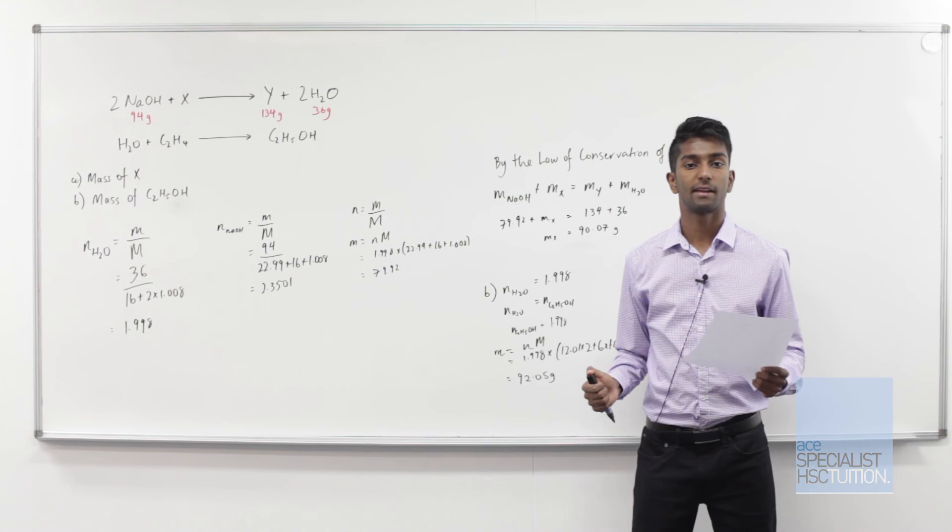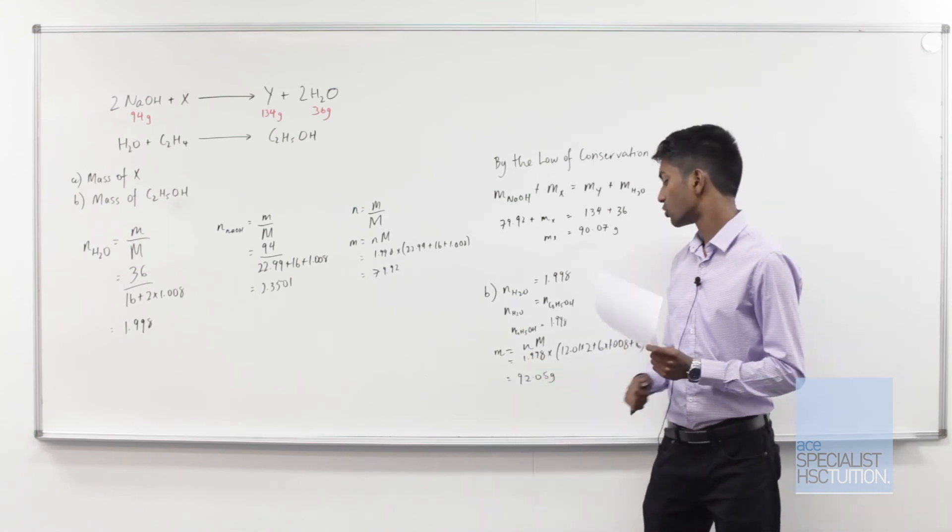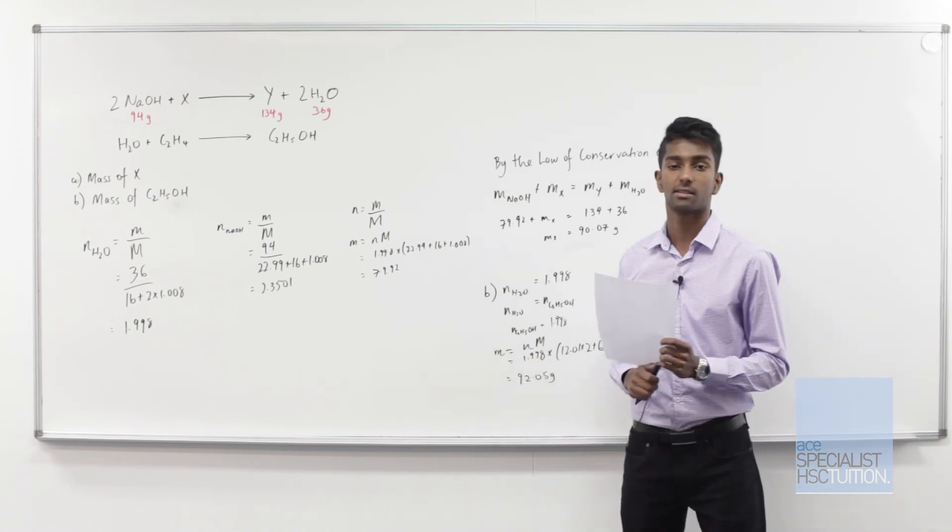So now that we've figured out the mass of ethanol as 92.05 grams, that's the answer to our question.